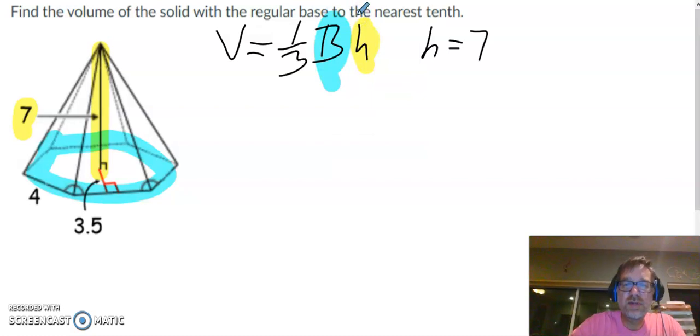To find the area of a hexagon, I am going to use the formula area equals one-half the perimeter of that shape times the length of the apothem.